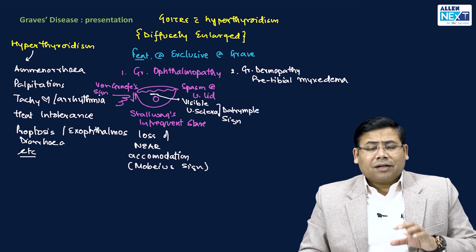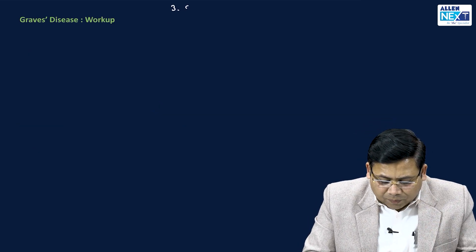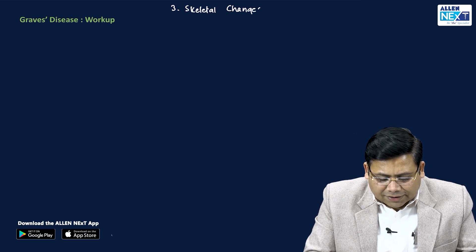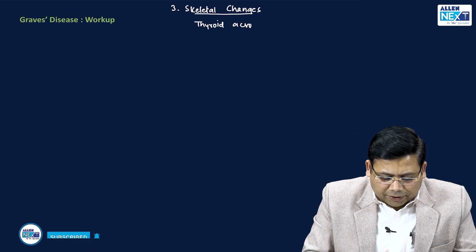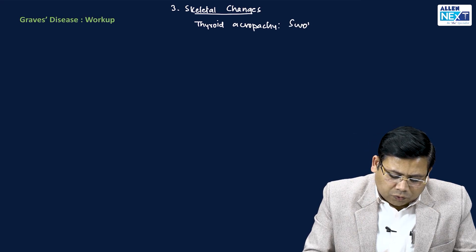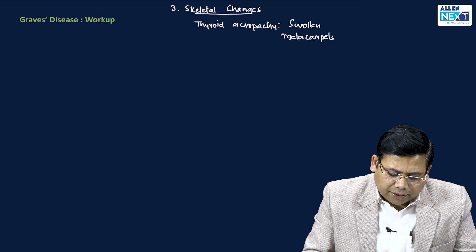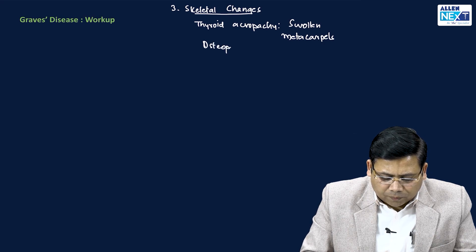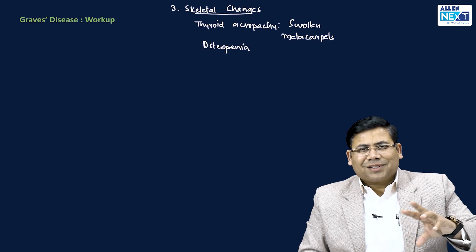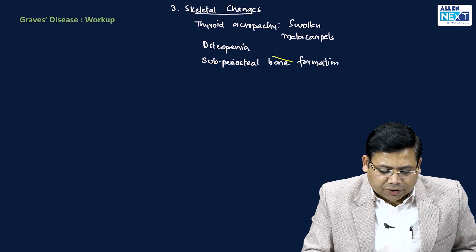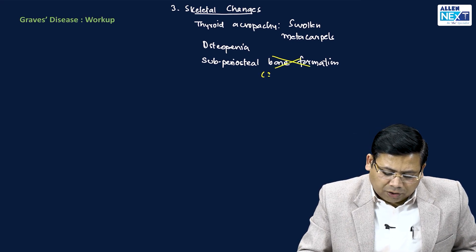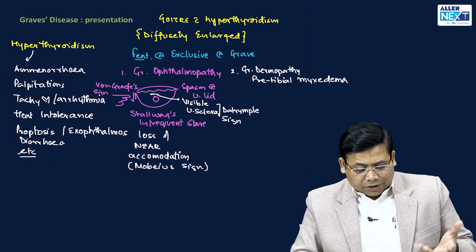There are also important skeletal changes exclusive to Graves. The first is thyroid acropachy, meaning swollen metacarpals. Additionally, although hyperthyroidism is associated with osteopenia, here you also get to see subperiosteal bone reaction — similar to what is seen in Codman's triangle — which is actually a subperiosteal bone reaction rather than true bone formation.